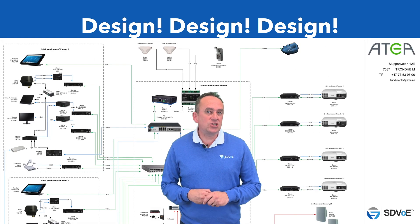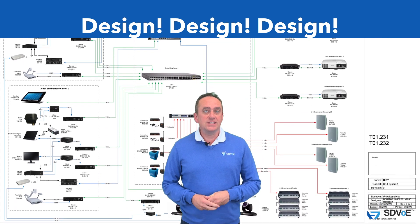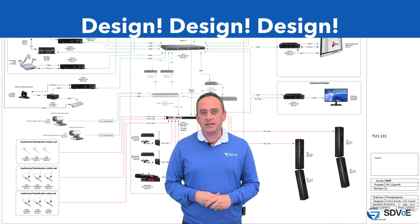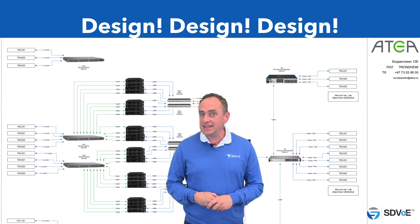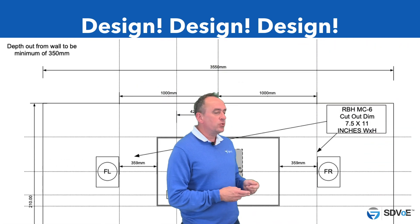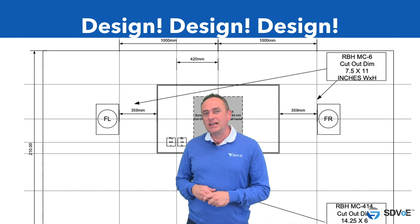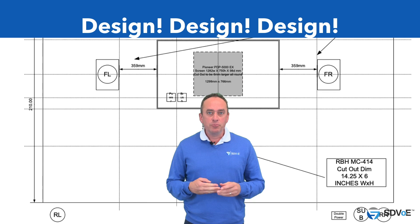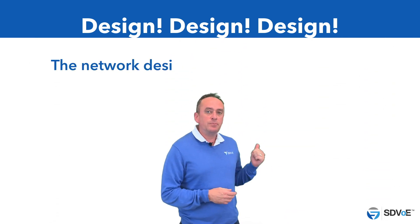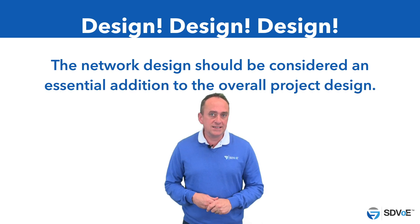Network designs are slightly different to a project design. Project designs include cable plans which identify the location of all the equipment in the project and how that equipment is interconnected. They also include important elevation drawings with accurate dimensions, technical product details, as well as certain sound system engineering information. Project designs are often large documents and the network topology design should be considered an essential addition to the overall project design.